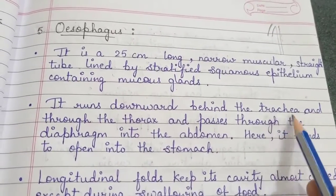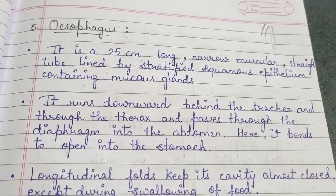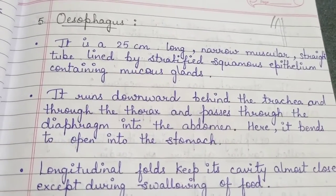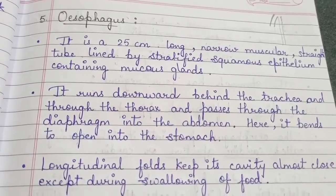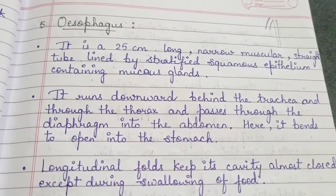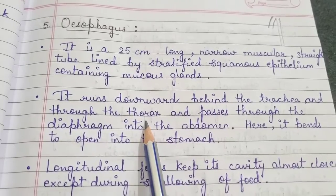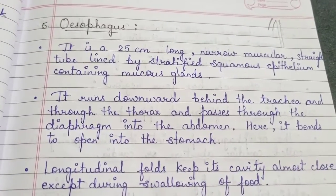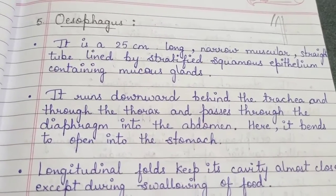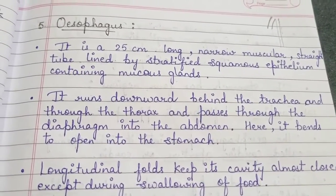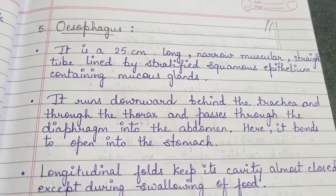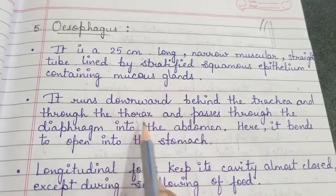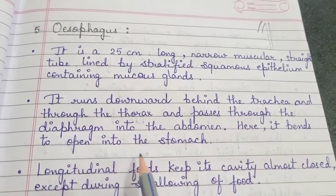The trachea is present in the thorax cavity. Friends, you know about the thorax cavity and abdominal cavity. The chest area around us we call the thoracic cavity. The cavity present in the abdomen we call the abdominal cavity. This is the structure and diagram of the human digestive system which we have also studied in the last video.